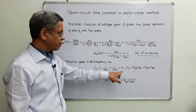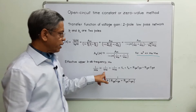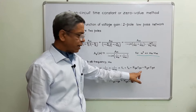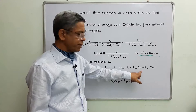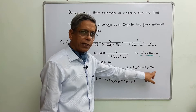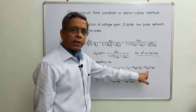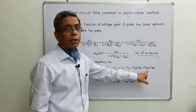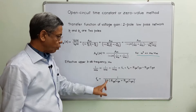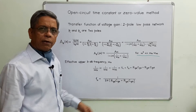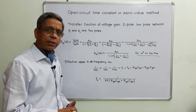We can define a single unified effective upper 3dB frequency by comparison. The expression is: 1/ωH = 1/ωH1 + 1/ωH2, which equals the sum of time constants. T1 is the time constant corresponding to ωH1 and relating to CGS, equal to RGS·CGS, where RGS is the Thevenin equivalent resistance across the terminals of CGS. Therefore, FH = 1 / (2π × sum of time constants).